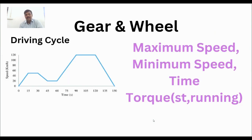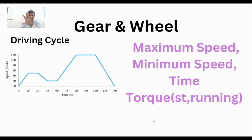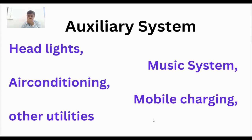Gear and wheel selection depends on the vehicle's maximum speed, minimum speed, and the desired pickup time. The driving cycle is very important for selecting gears and wheels, as well as for motor and battery design. Gear and wheel material also depends on the starting torque, making it another important component of the electric vehicle.